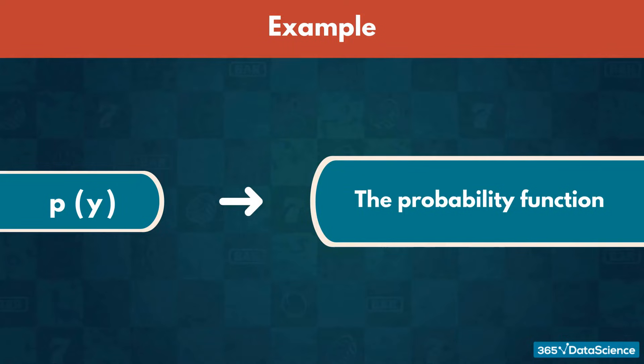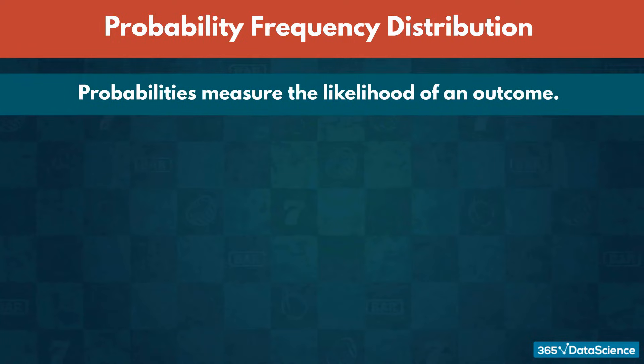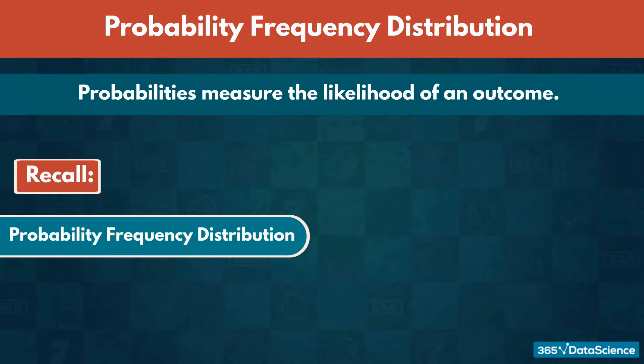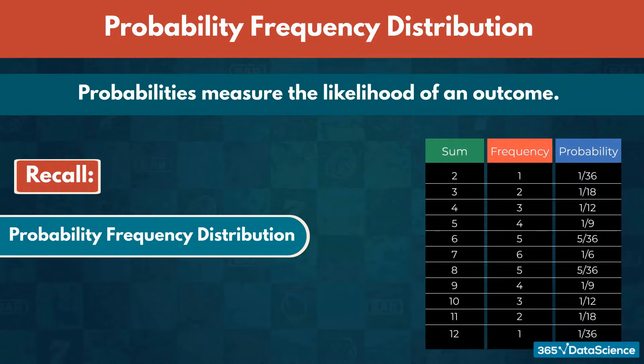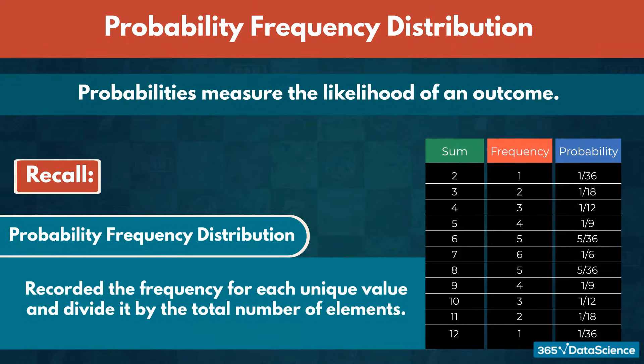Probability distributions, or simply probabilities, measure the likelihood of an outcome depending on how often it is featured in the sample space. Recall that we constructed the probability frequency distribution of an event in the introductory section of the course. We recorded the frequency for each unique value and divided it by the total number of elements in the sample space.